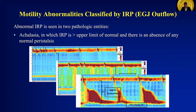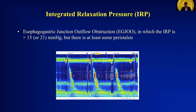And finally, type 3 achalasia, in which you have these spastic contractions. These are premature contractions — they are spastic, they are not normal peristaltic sequences, and they're typically high amplitude like this. The other entity we see is esophagogastric junction outflow obstruction, or EGJ-OO, in which the IRP is greater than the upper limit of normal, but there is at least some normal peristalsis. Often you can see ineffective peristalsis, but there will be some normal peristalsis and progressive peristaltic sequences, unlike in achalasia.